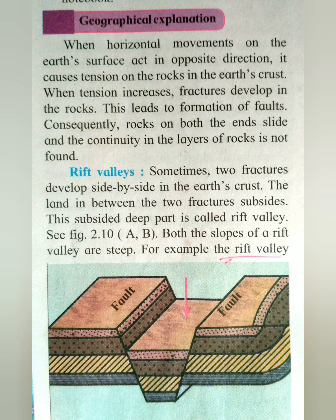Let us see the geographical explanation. When horizontal movements on the earth's surface act in opposite directions, it causes tension on the rocks in the earth's crust. When tension increases, fractures develop in the rock naturally — cracks and fractures are developed. This leads to the formation of faults.